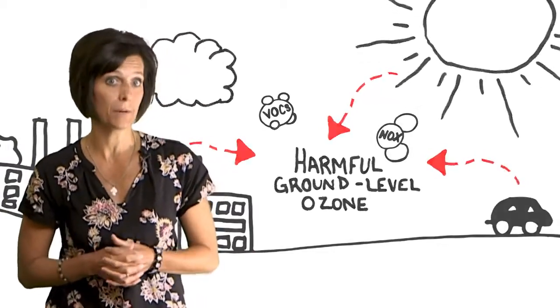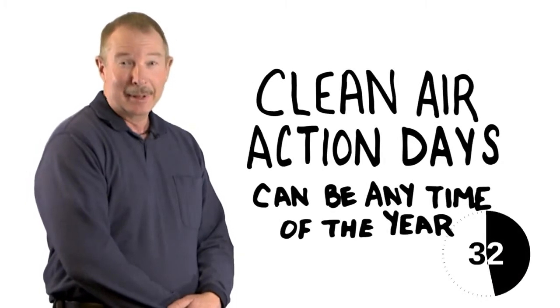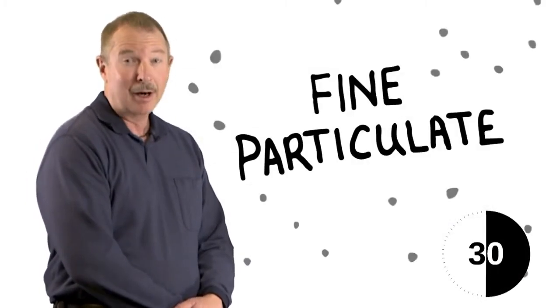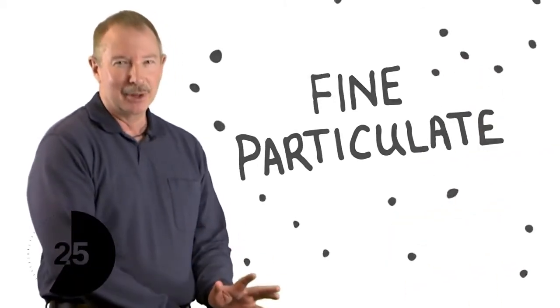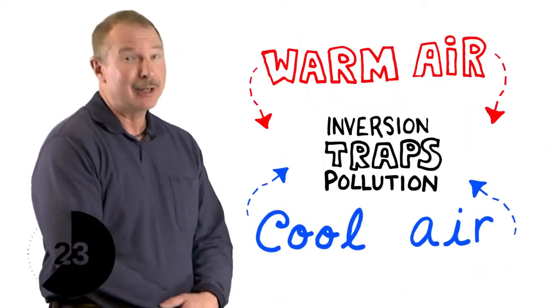That usually happens between May and September. But that's not the only time we call Clean Air Action Days. Harmful levels of fine particulates—really tiny dust—can happen anytime during the year. Typically we see that during the winter months.